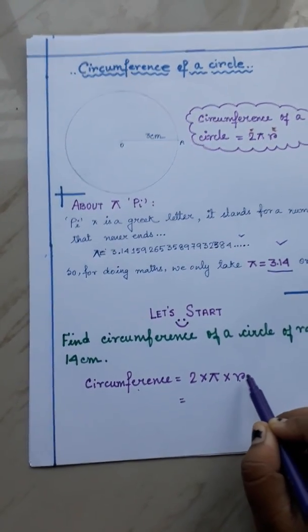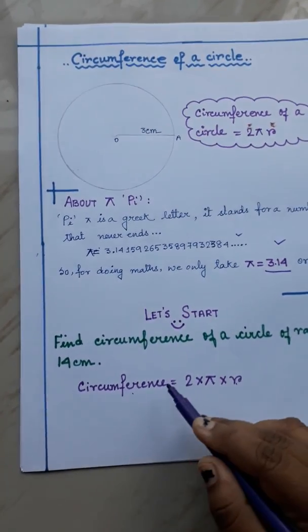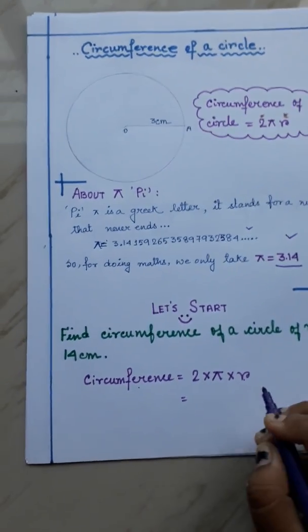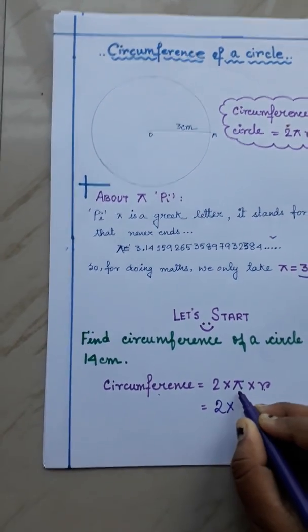I already have written down the formula here. But whenever you have to do the sum, at first you have to write down the formula of the circumference of a circle. Then, 2, we will write down. After that, pi.